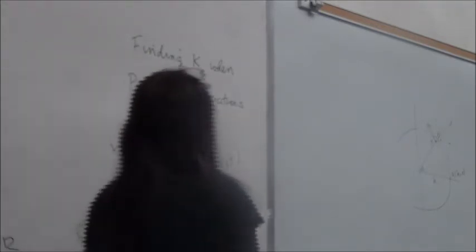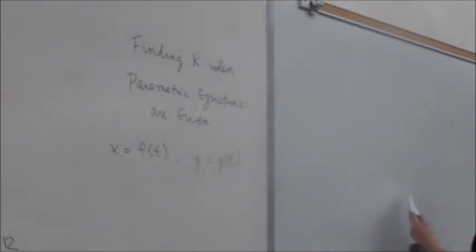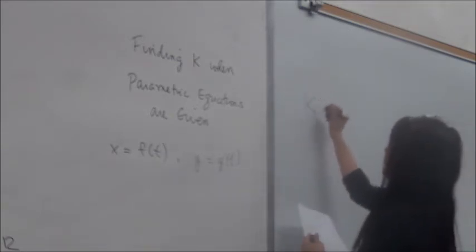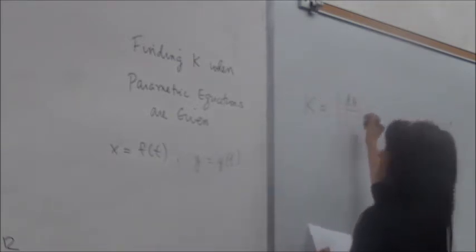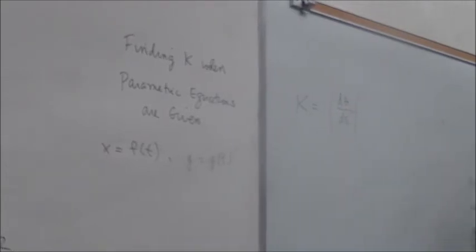So again, we need to find our curvature. What should we do? Curvature is the absolute value of the rate of change of theta with respect to s. Okay, so we're still in x, y.